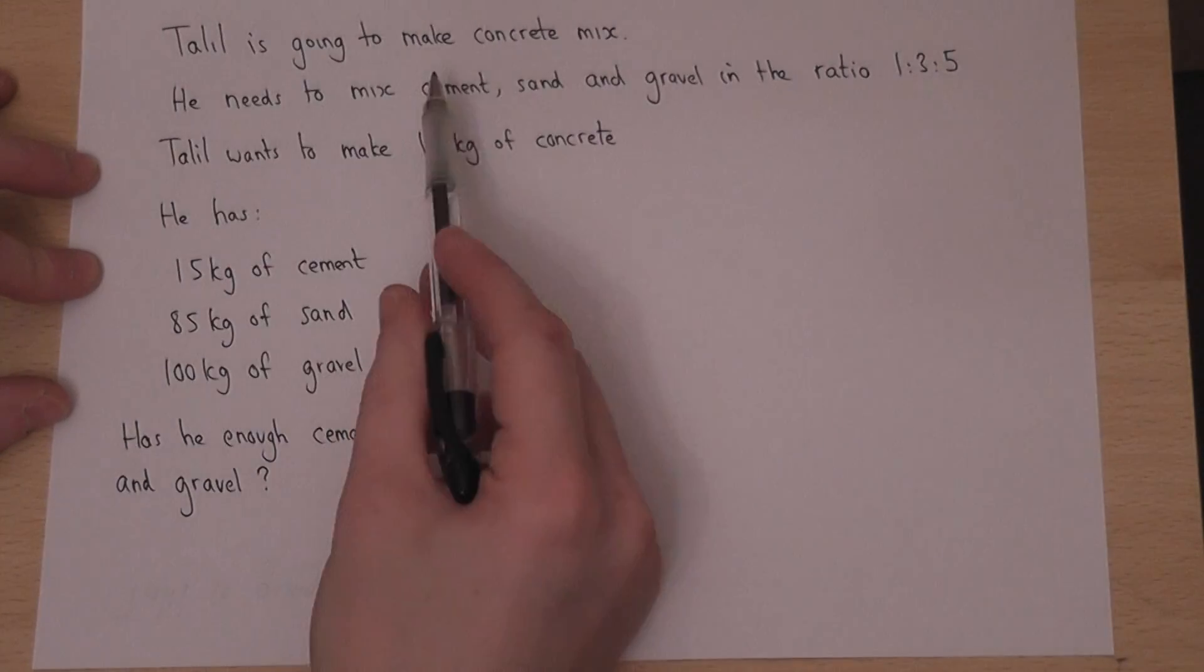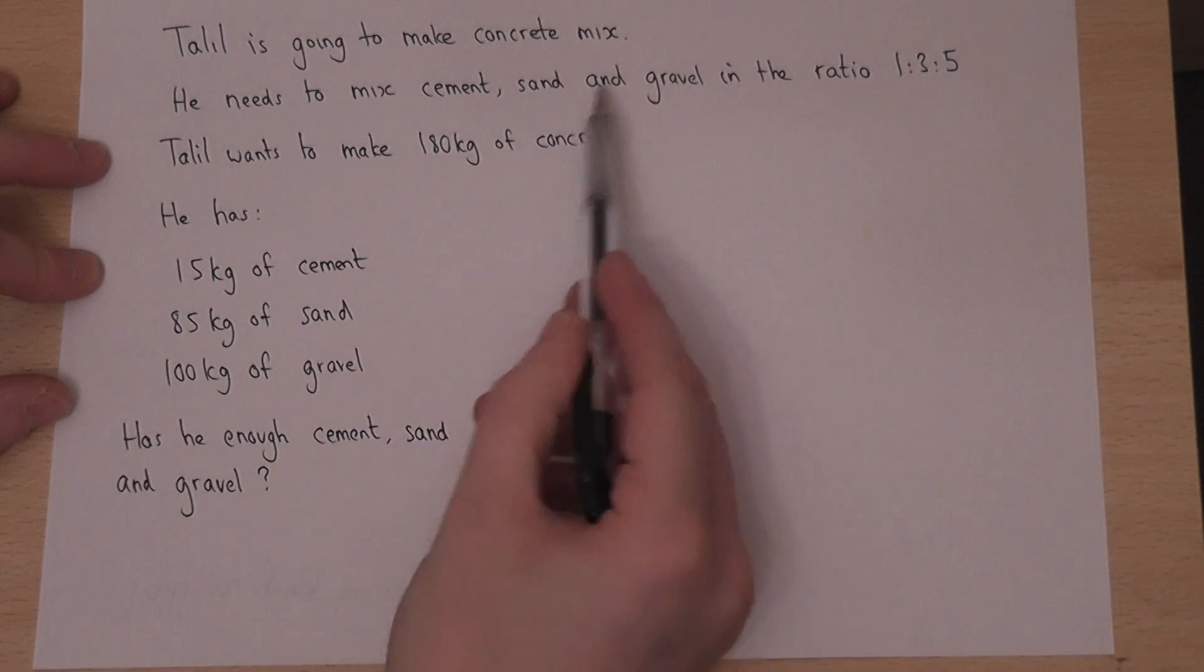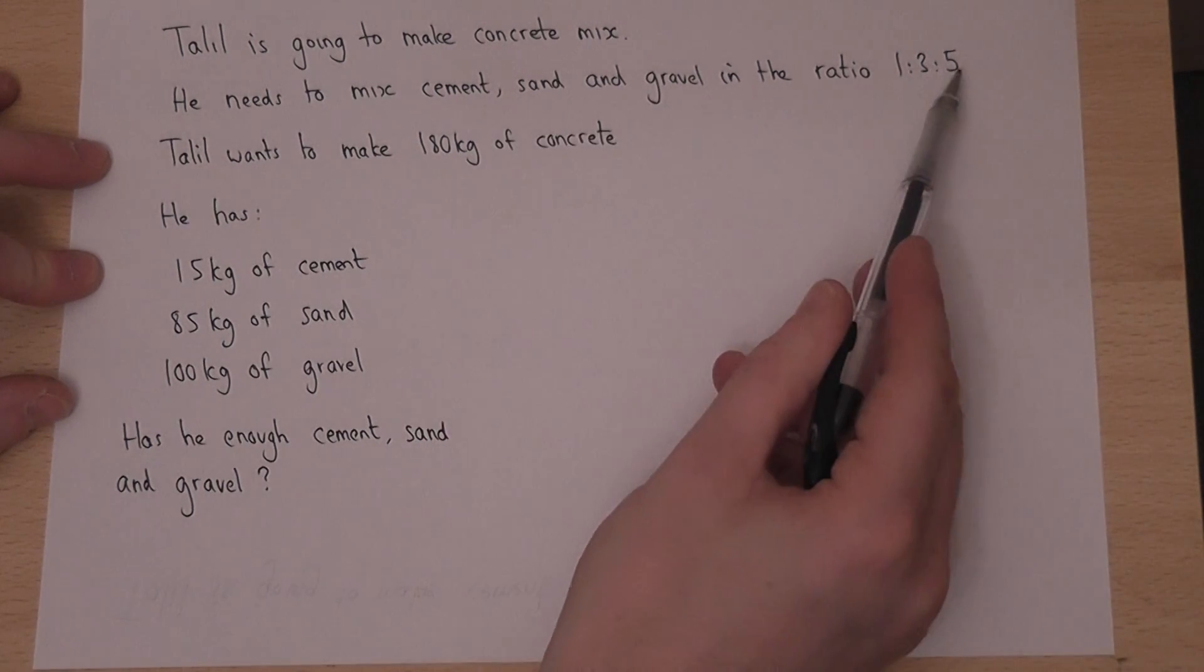In this question, Talil is going to make concrete. He needs to mix cement, sand and gravel in the ratio 1 to 3 to 5.